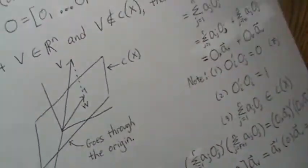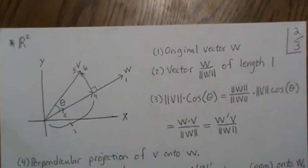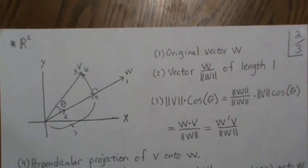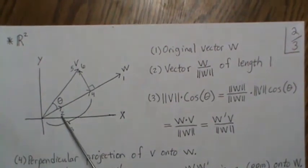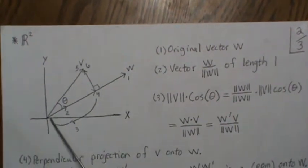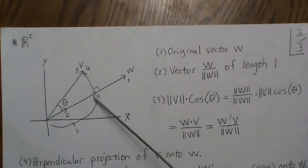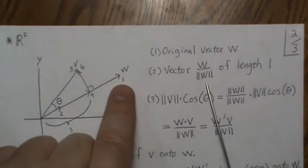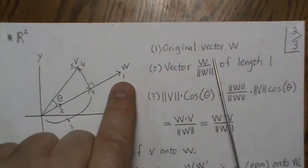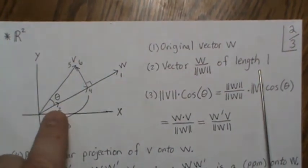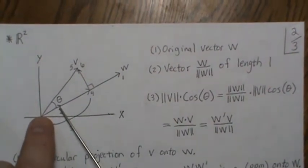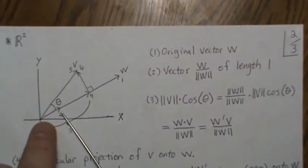Before jumping into the general approach, let's do an example in R2 space. We have a vector W and a vector V. I've labeled the short unit-direction vector as 2, a distance as 3, the projection vector as 4, the original V as 5, and the orthogonal complement vector as 6. Starting with 1, the original vector W: if we divide by its length we get a vector of length 1 in the direction of W.